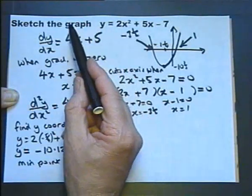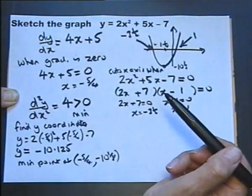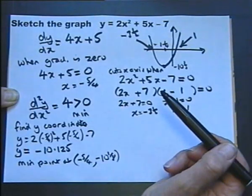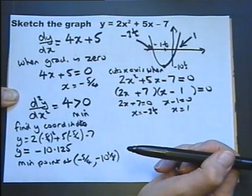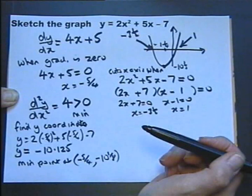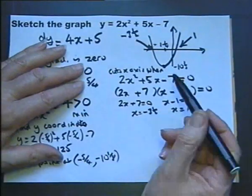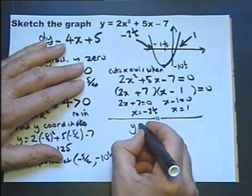So I have used calculus to help me sketch the graph because it worked out the minimum point. Now I'm not saying that it's better than other methods. It is another method, which at times could be better. I mean, let's face it, I could have found the minimum point by completing the square. Let's just do that, shall we? Let's take the equation again.